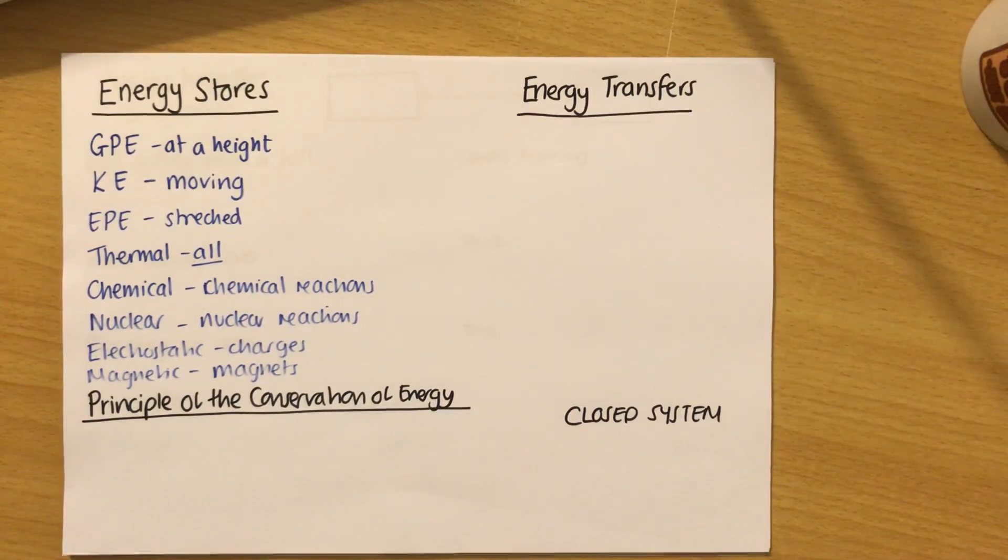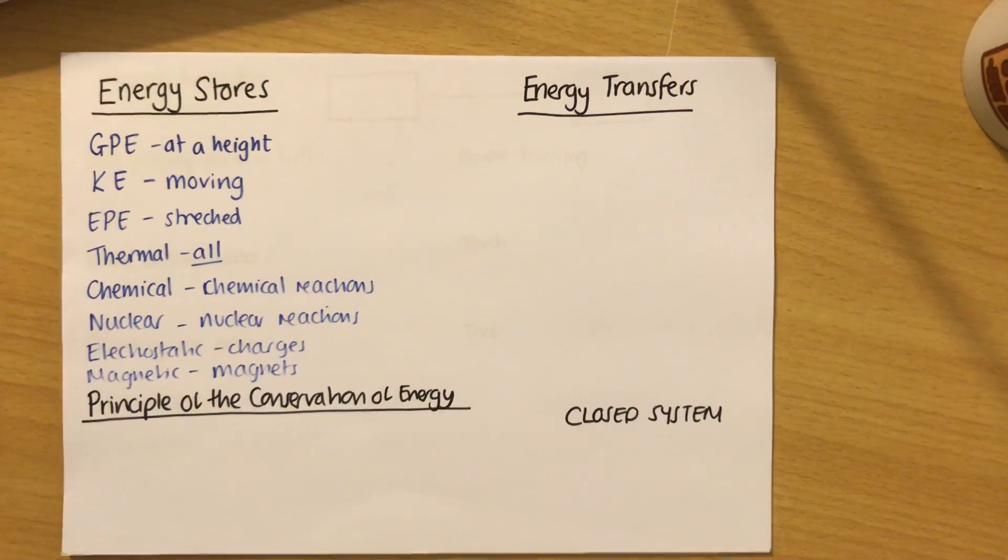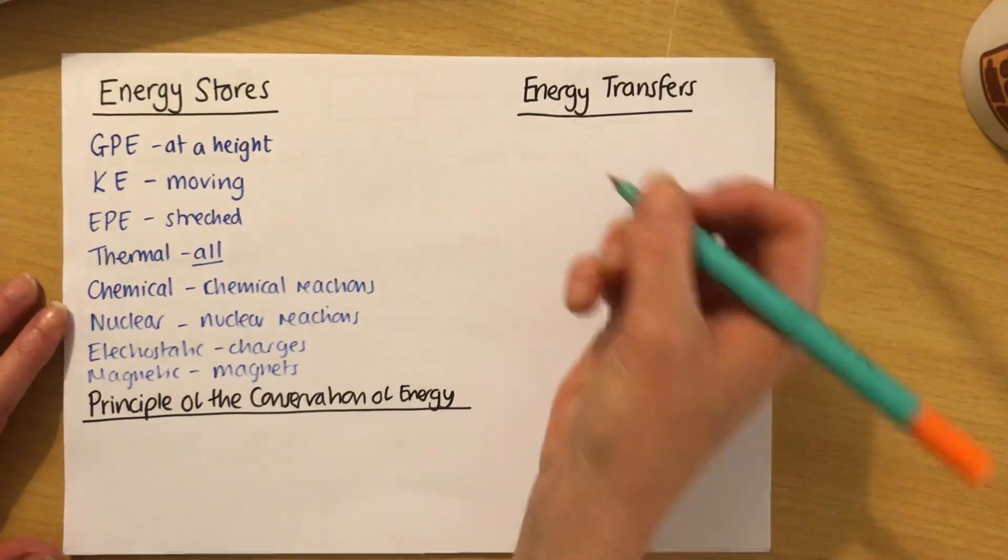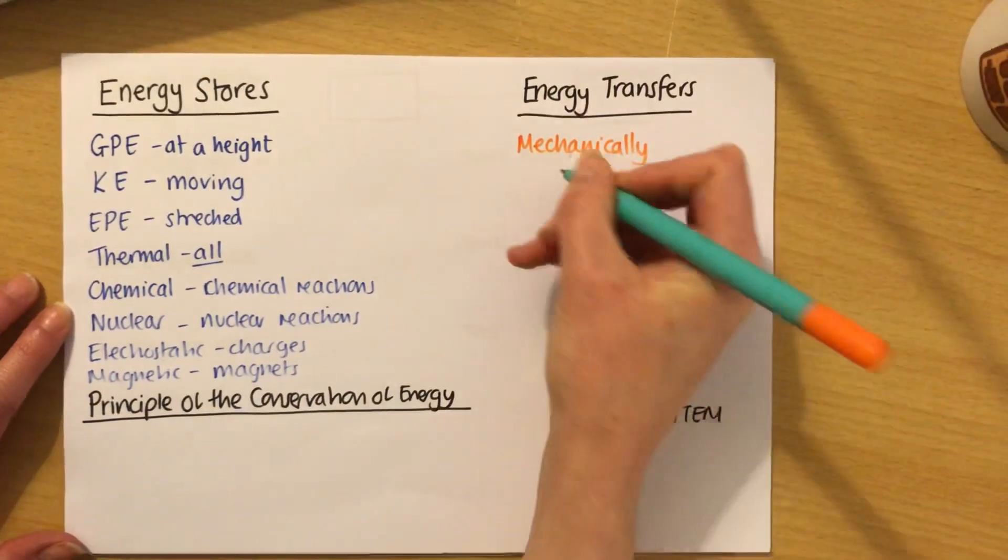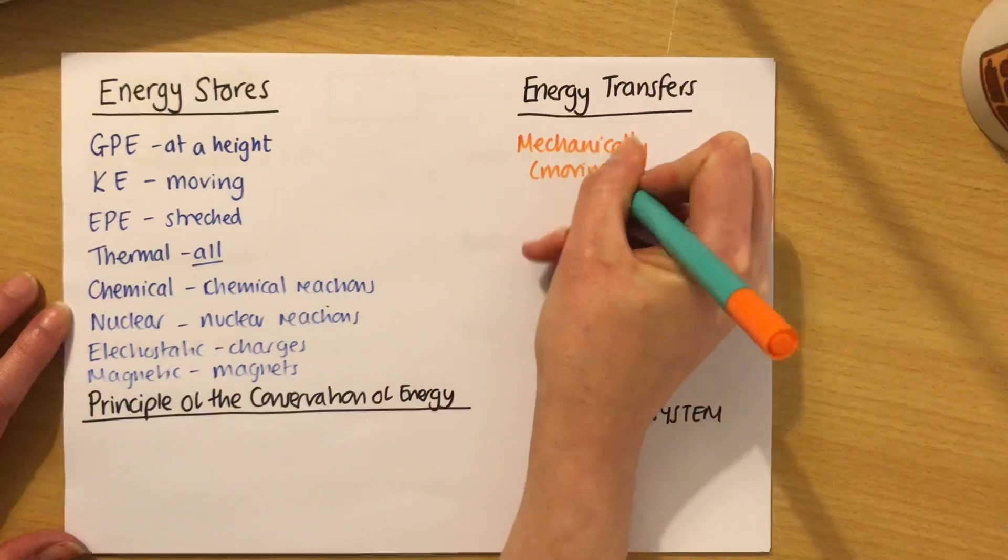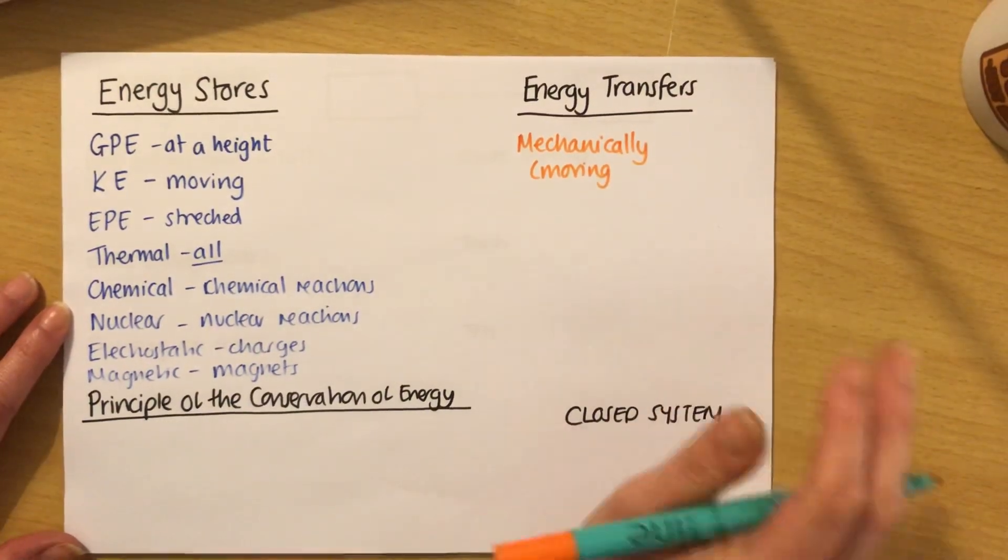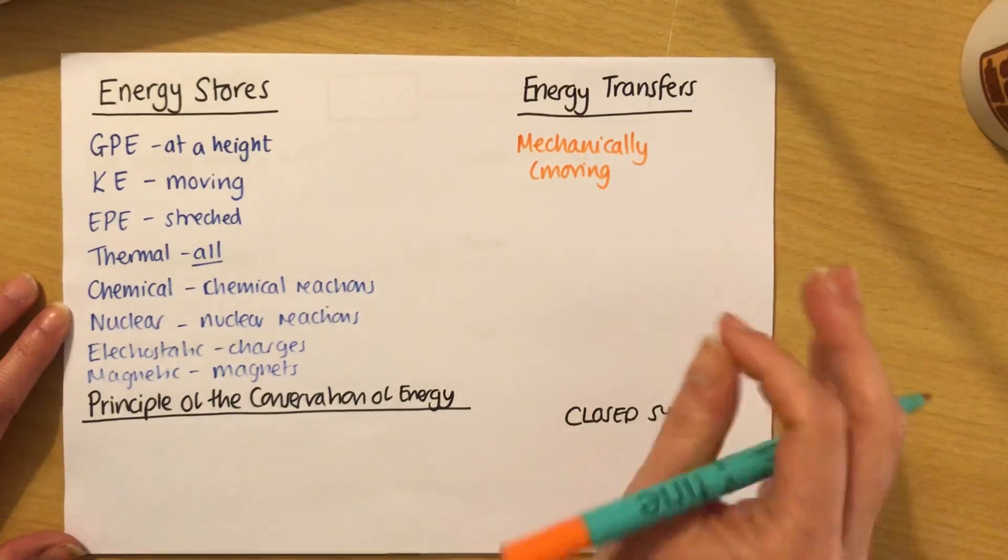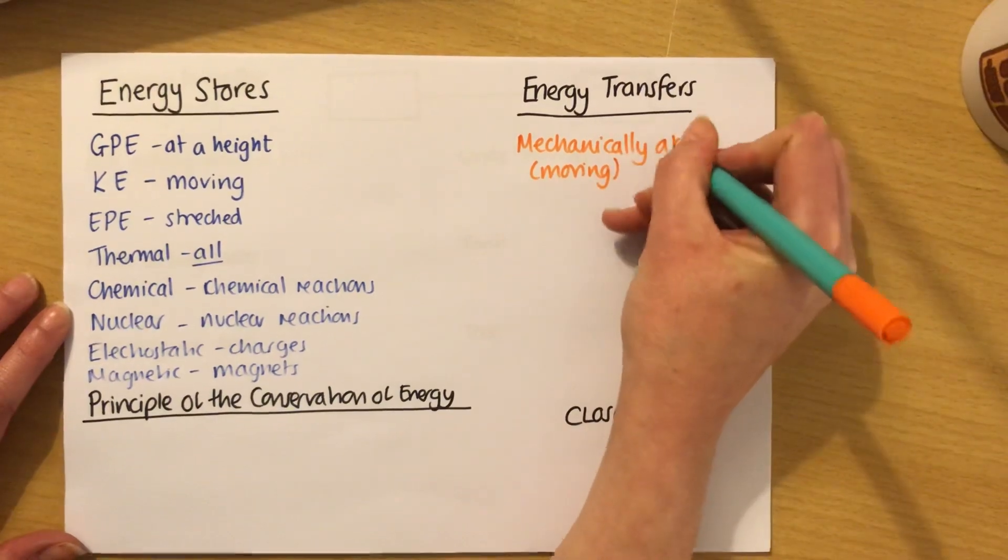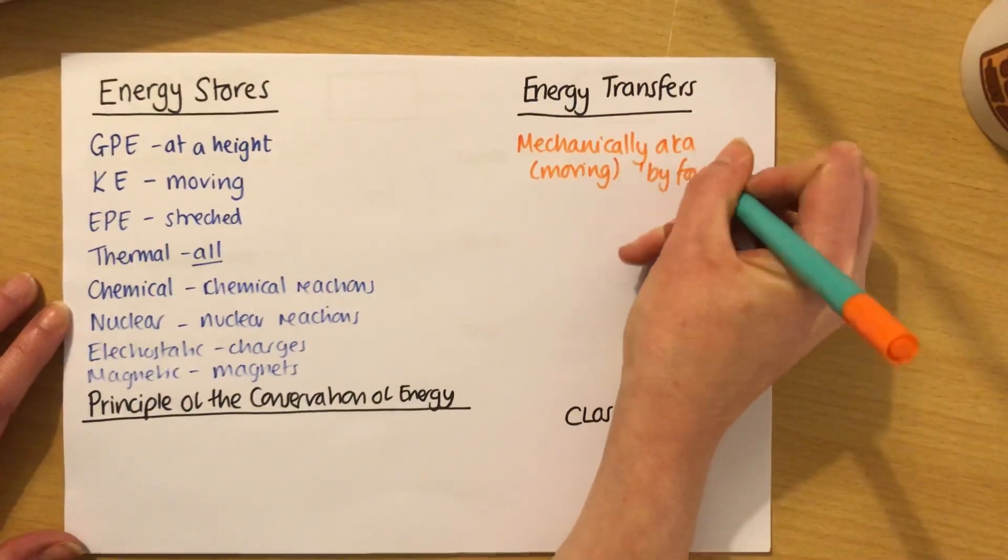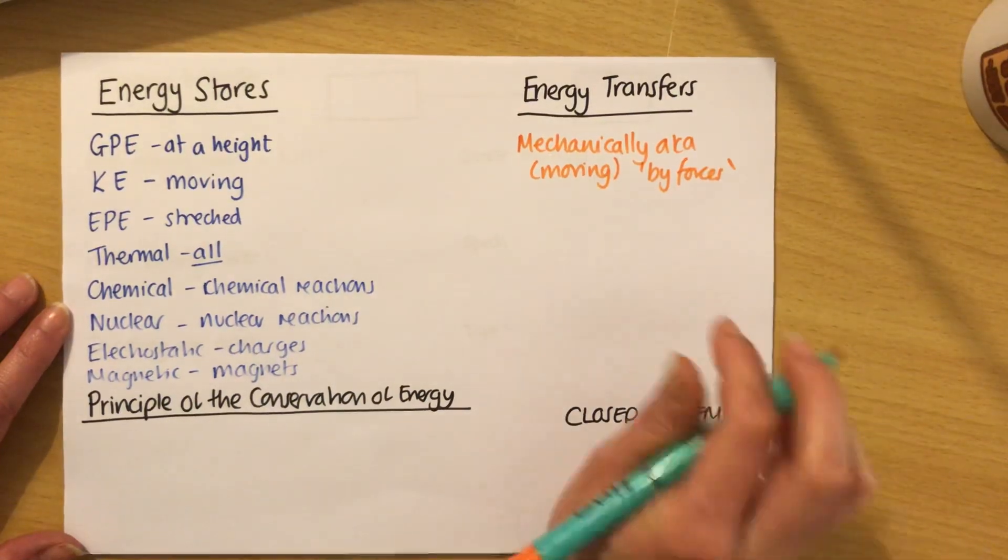Then we've got something called energy transfers, and that's how energy goes from store to store. There's four main ways you can transfer energy. Firstly, there's mechanically. Mechanically means that something is moving. An example of this would be by sound. If you have sound energy transferring something, the particles are moving and vibrating. It's also known as by forces. Sometimes you'll see it written as it's transferred by forces.